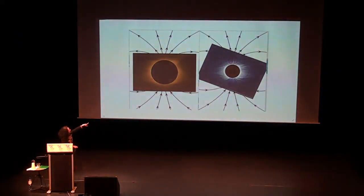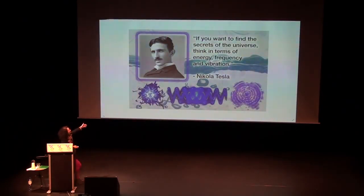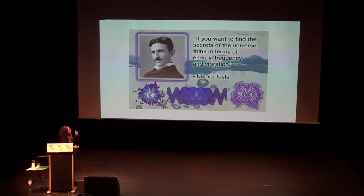You can see in the eclipse pictures the electromagnetic signature, and then in a diagram of the magnetic field it makes more obvious what you're seeing when the Sun is being occulted by the Moon. 'If you want to find the secrets of the universe, think in terms of energy, frequency, and vibration' — Nikola Tesla. This is one of the most important quotes because of the work this man did, much of which we've probably never had access to, since when he died his lab got raided and most of it became classified.